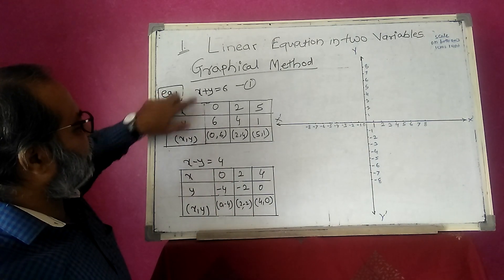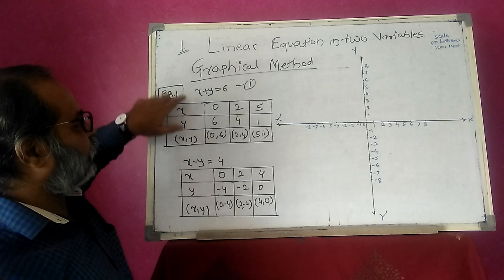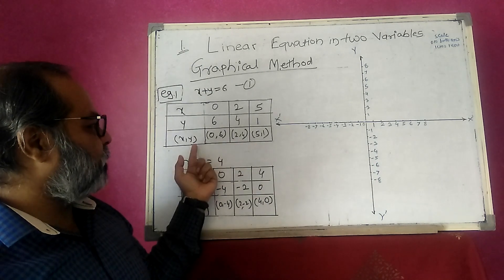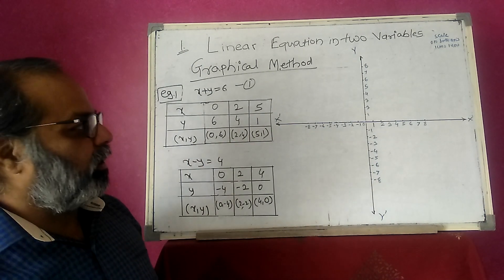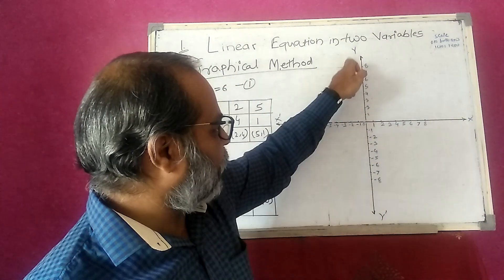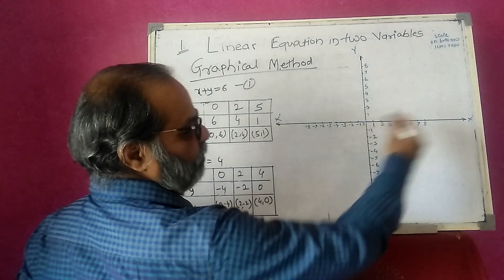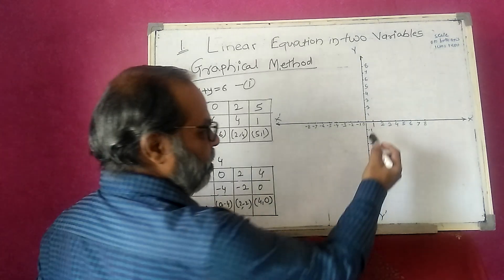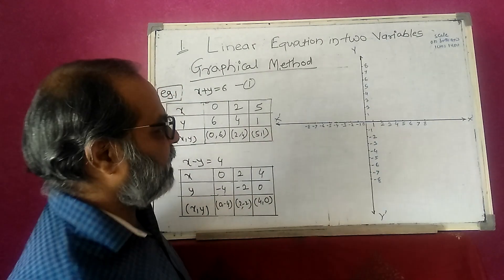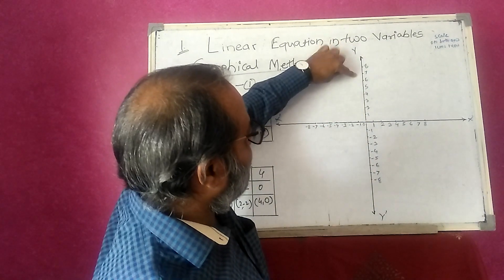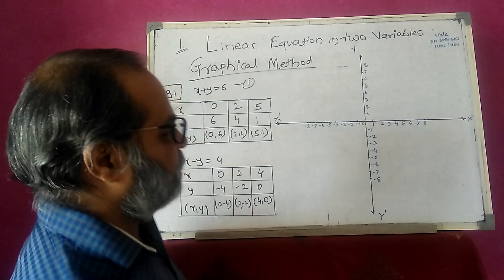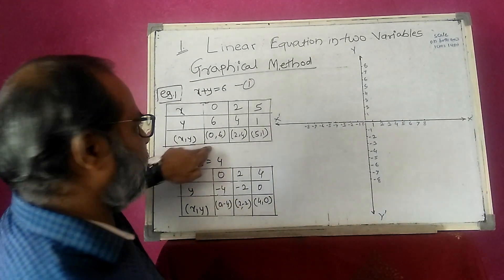I write the coordinates in tabular form. For x plus y is equal to 6, the coordinates are (0, 6), (2, 4), and (5, 1). I plot all three coordinates on the graph. This is our Cartesian coordinate system — the horizontal is the x-axis, the vertical is the y-axis. To the right is positive x, to the left is negative x; upward is positive y and downward is negative y.